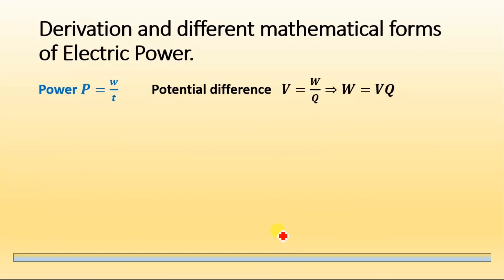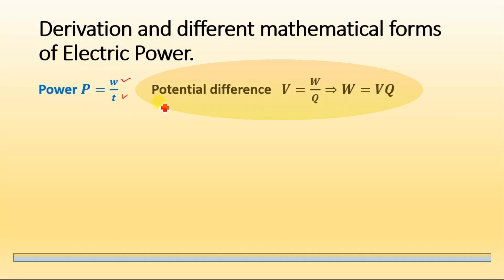According to the definition of power, P = W/T, where W is the work done and T is the time. Now, according to the definition of potential difference, V = W/Q, where W is the work done and Q is the charge. In other words, the work done per unit charge is voltage or potential difference.